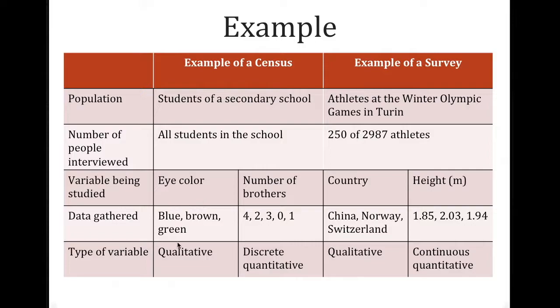Of these data or variable being studied, the type for eye color is qualitative because we have a name, blue, brown, and green. Whereas number of brothers is a number that we're asking for, so it's definitely quantitative. Because you can't have half of a brother or a quarter of a brother, we call this discrete because it cannot be a decimal.